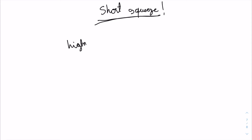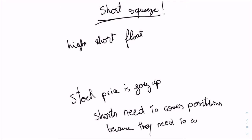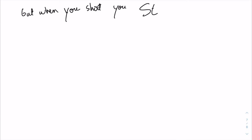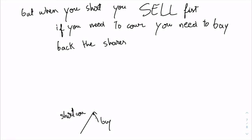The last term we need to understand is short squeeze. Short squeeze basically happens when a company has a high short float and the stock price is going up. When the stock price is going up, shorts need to cover positions because they are in a loss. When people are shorting, they first sell before buying. When they need to cover positions, they are buying the stock. When the stock price is going up, shorts are covering and buying, which creates this short squeeze.